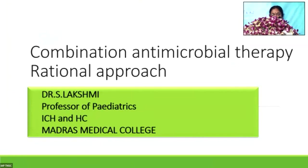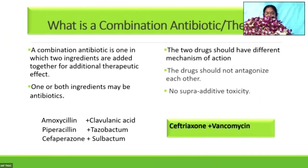My topic is going to be on combination antimicrobial therapy — a rational approach. Coming to the topic: what is combination antibiotic or combination therapy? It is a combination in which two ingredients are added together for additional therapeutic effect. One or both ingredients may be antibiotics. Examples are amoxicillin plus clavulanic acid, piperacillin plus tazobactam, and cefoperazone plus sulbactam.